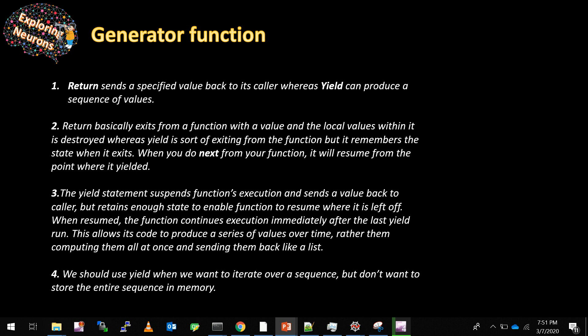Return sends a specified value back to its caller, whereas yield can produce a sequence of values. Return exits from a function with a value and the local variables within it are destroyed, whereas yield exits the function but remembers the state when it exits. As you saw in the example, it remembered where it stopped and gave the next output when you called next(). The yield statement suspends the function execution, sends a value back to the caller, but retains enough state to enable the function to resume where it left off. In a normal function, calling it again starts everything from scratch; in a generator function, yield has memory of where it executed and resumes execution from that point.